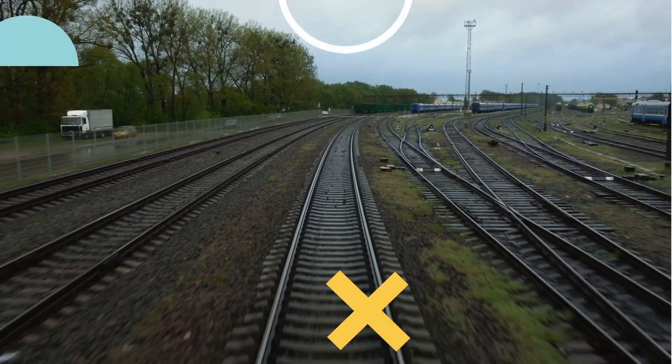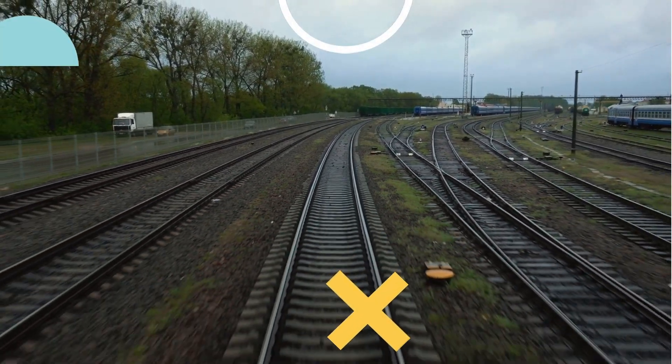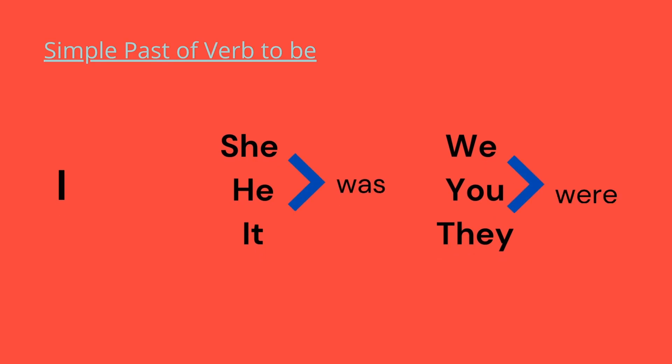Now let's start with the verb to be in the simple past. For the simple past, the verb to be changes into was or were according to the subject of the sentence.